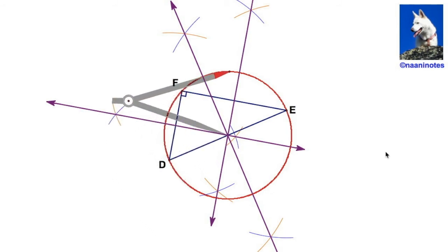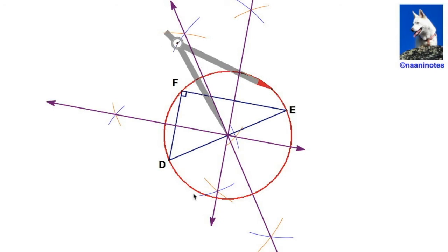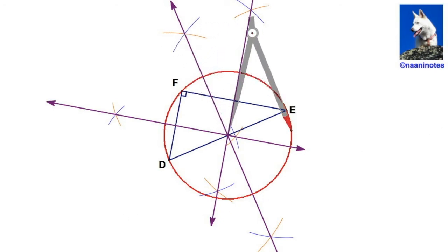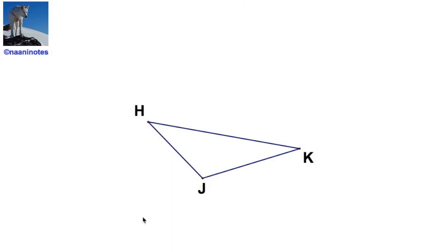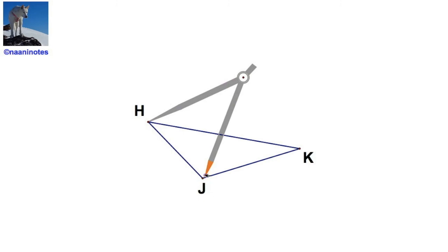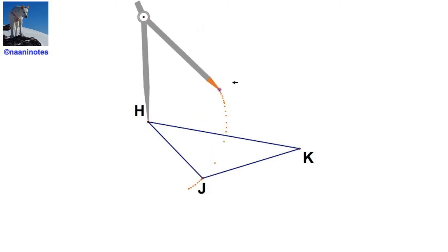Okay, one more. We've done acute and right — how could we not do obtuse? Let's go obtuse. Angle J is obtuse. Let's see what happens. We're going to do all three perpendicular bisectors again. I'm going to gap from H to J and give it a nice swing.